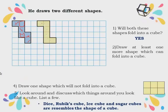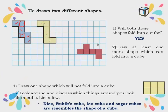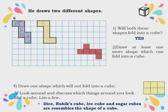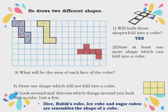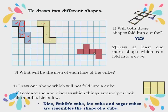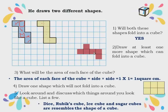Next question: draw at least one more shape which can fold into a cube. They are asking you to draw one more shape that can be folded into a cube. It can be drawn in any way, as long as it can fold into a cube. Also, what will be the area of each face of the cube? Since it is a square shape with one centimeter sides, the area of a square is side × side, so one × one equals one square centimeter.